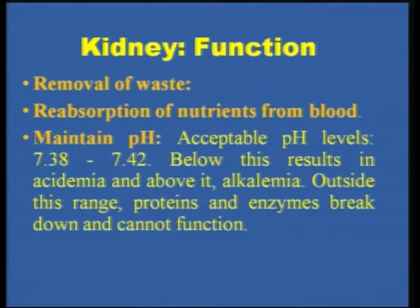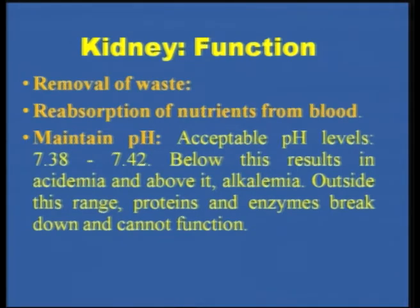The kidneys play a very important role not only in electrolyte balance and homeostasis, but also in erythropoiesis and many other functions. The main functions include removal of waste from the body, reabsorption of nutrients from the blood, and maintaining a normal pH level. The acceptable pH level is normally between 7.38 and 7.42. Below this results in acidemia and above it causes alkalemia. Outside this range, proteins and enzymes will break down and cannot function effectively.